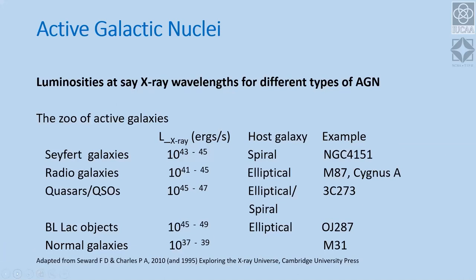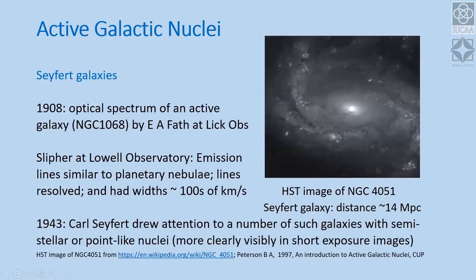I'll tell you about these objects and touch on two aspects: our current understanding of how this energy might be generated, and how fast the jets are moving. Normal galaxies have extreme luminosities of about 10^37 to 10^39 ergs per second like Andromeda M31, whereas the most luminous quasars could be 10^45 to 10^47 ergs per second. All this energy is generated in the central nuclear region — about 10^13 solar luminosities from a region you cannot resolve with normal telescopes.